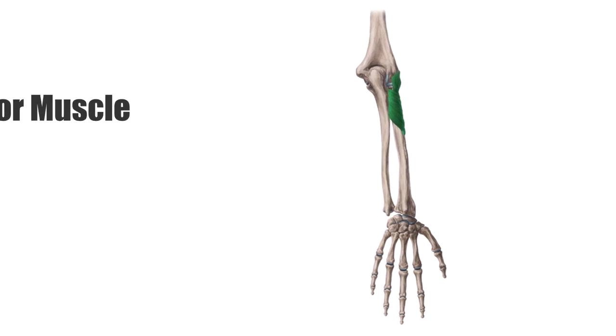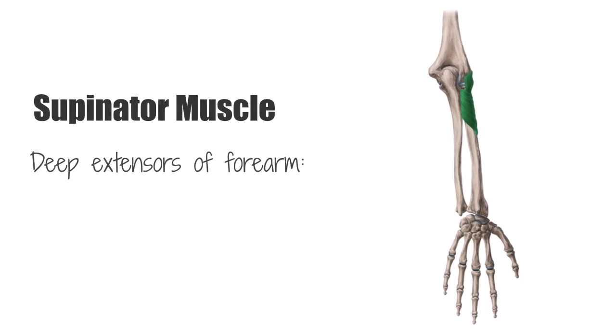The supinator muscle is one of the deep extensors of the forearm. The deep extensors of the forearm consist of five muscles located at the posterior side of the forearm, namely,